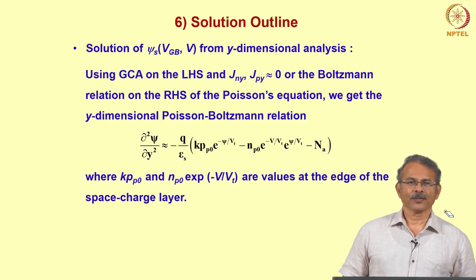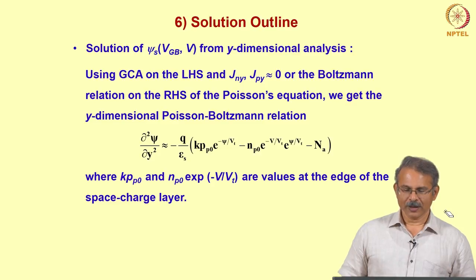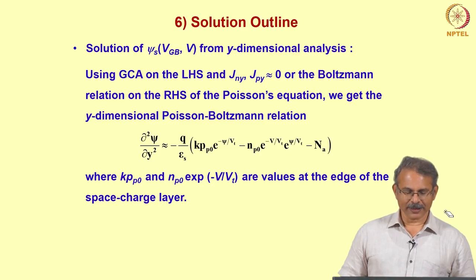The outline of the solution was that using gradual channel approximation on the left hand side, and the fact that Jny and Jpy is equal to 0 approximately — which is another way of stating the Boltzmann relation — on the right hand side of the Poisson's equation, we get the y-dimensional Poisson-Boltzmann relation, where kpp0 and np0 into exponential of minus V by Vt are values at the edge of the space charge layer.